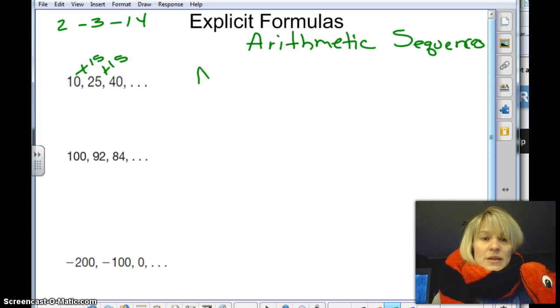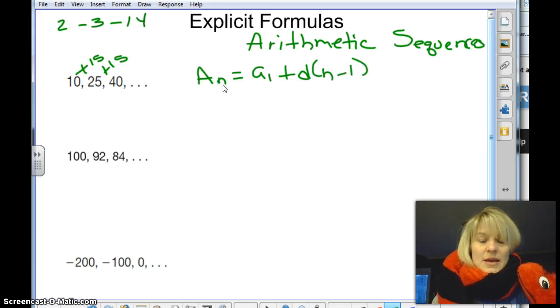Now the formula we've been using for the arithmetic sequence is a sub n equals a sub 1 plus d times n minus 1. And we practice this a little bit in class, where the n is the term we're trying to find. That's the first term, second term, third term. d is the common difference, so we now know that's 15. And a sub 1 is that first term.